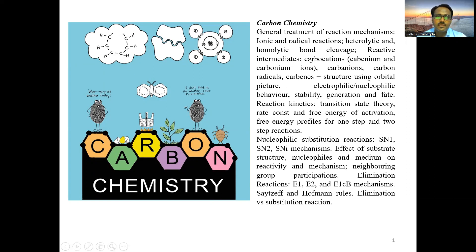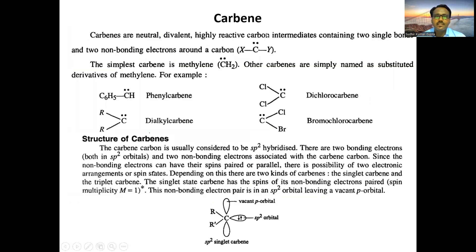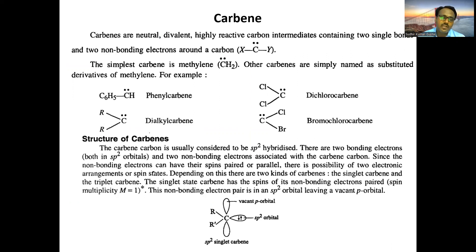First, we are going to discuss the reaction intermediate carbene, which was left in the previous lecture. Carbenes are neutral, divalent, and highly reactive carbon intermediates. They have two single bonds and two non-bonding electrons. The simplest carbene is methylene carbene, which has two C-H single bonds and two non-bonding electrons.